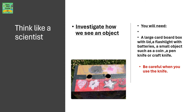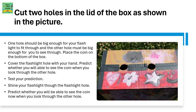Think like a scientist: investigate how we see an object. You will need a large cardboard box with a lid, a flashlight with batteries, a small object such as a coin, a pen, and a knife or craft knife. Be careful when you use the knife. Cut two holes in the lid of the box as shown in the picture. One hole should be big enough for your flashlight to fit through, and the other hole must be big enough for you to see through.